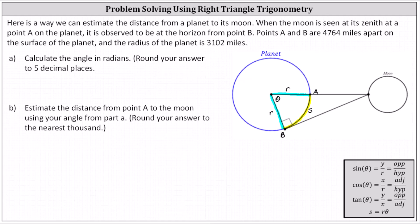we have the planet here on the left. Here's point A, point B, and the central angle theta. Points A and B are 4,764 miles apart on the surface of the planet, and the radius of the planet is 3,102 miles.